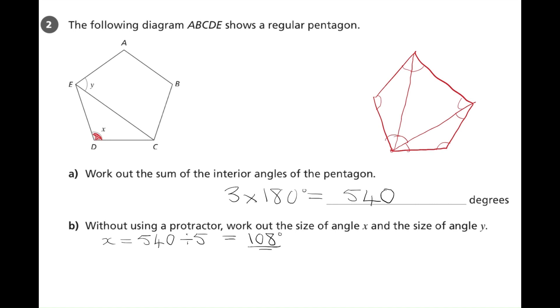Finally, we're asked to find the size of angle y. The pentagon is regular, which means that all the sides are equal. So the side DE is equal to the side DC. So we have an isosceles triangle, or triangle DEC is isosceles.